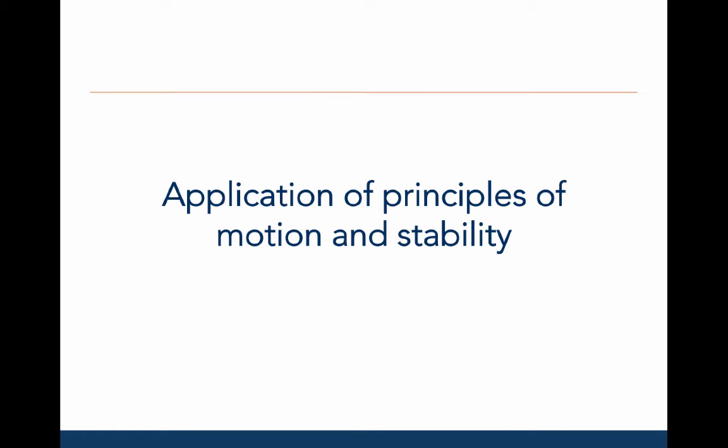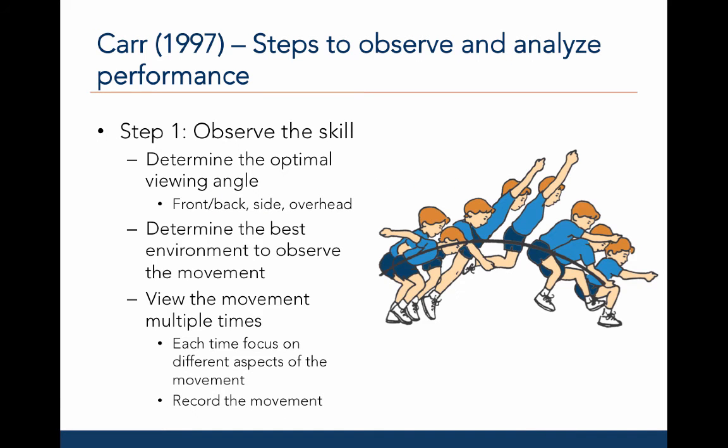For this last section of material, let's explore how we can apply the principles of motion and stability to observe and analyze movements. In 1997, Carr outlined the steps necessary to observe and analyze motor performance. The first step involves observing the skill. To do this, we must determine the optimal viewing angle — is the movement visible from the front or back, from the side, or overhead? For example, the best viewing angle is from the side for a standing long jump, as depicted here.